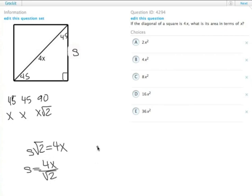Now remember that the area of the square equals the side value squared. So we're going to square that side value. 4x over the square root of 2, quantity squared.